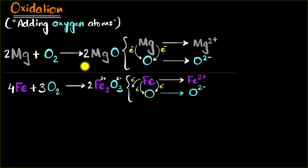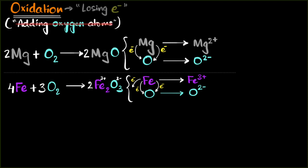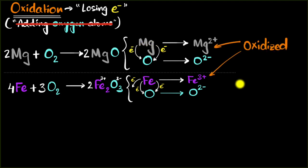In most cases, when you add oxygen to something, that something loses electrons. So we said oxidation involves loss of electrons — that is our new definition, because it generalizes oxidation. We now say forget about oxygen atoms: anything that loses electrons, we will call it oxidation. So magnesium is being oxidized because it's losing electrons. Iron is being oxidized because it is losing electrons. That is the current definition of oxidation.